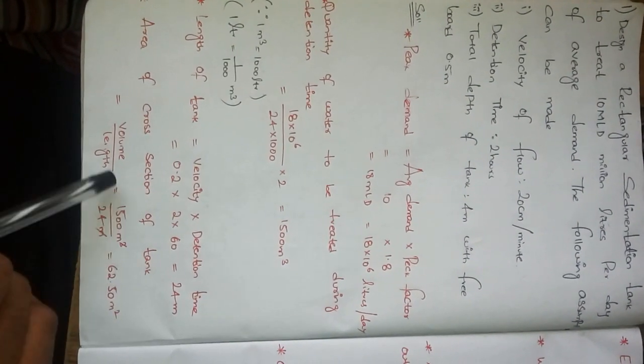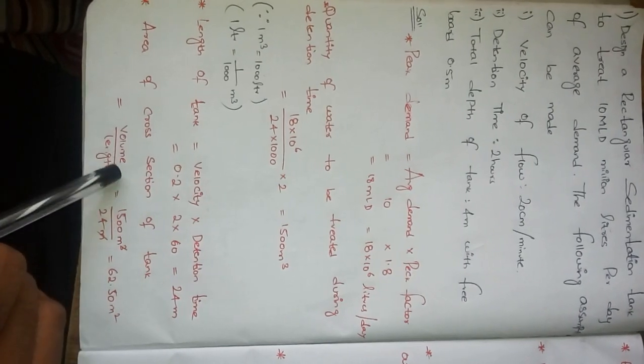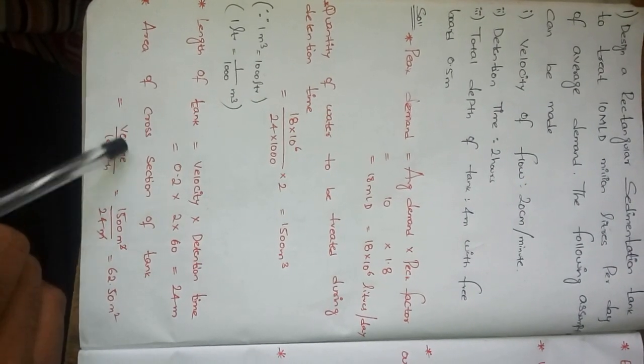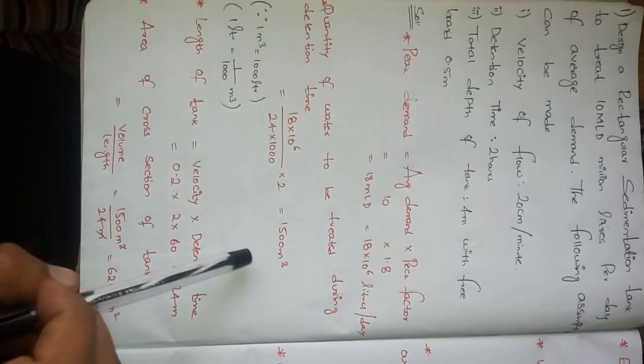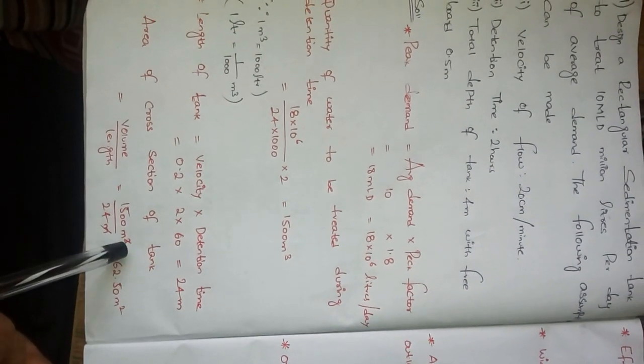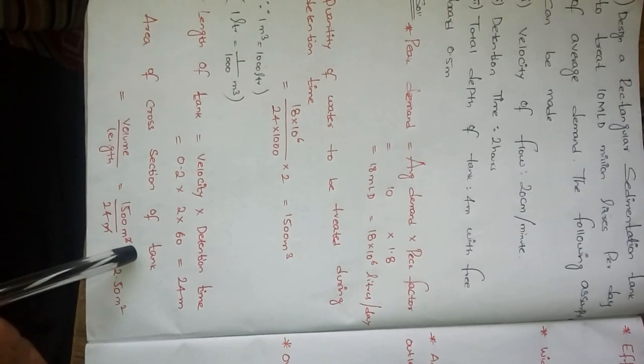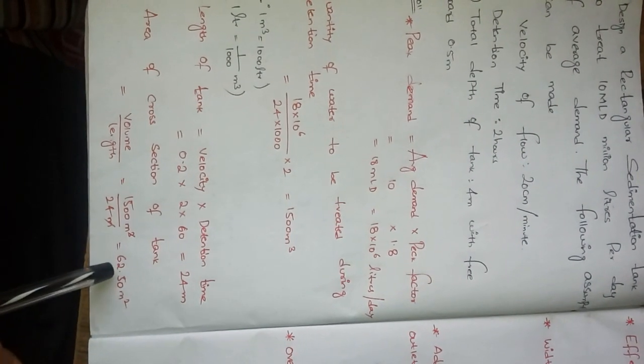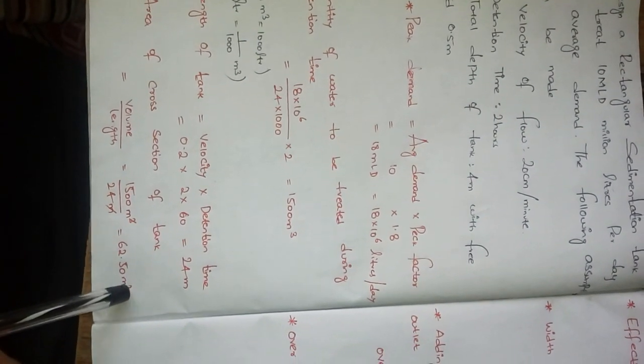Next we have to calculate the area of cross section of tank. Area of cross section of tank is volume by length. What is the volume we have got? 1500 meter cube. What is the length we have got? 24 meters. Here meter cube and meter will cancel, leaving meter squared. The value is 62.50 meter square.